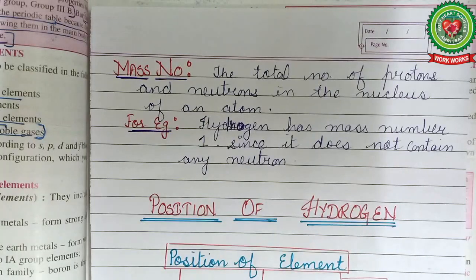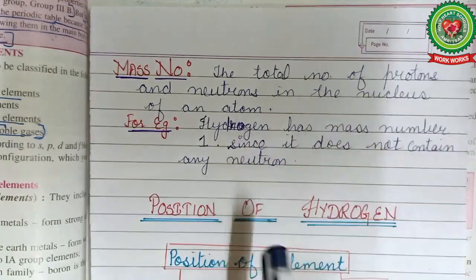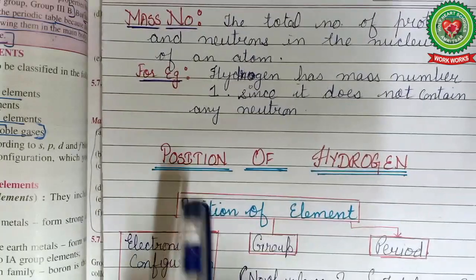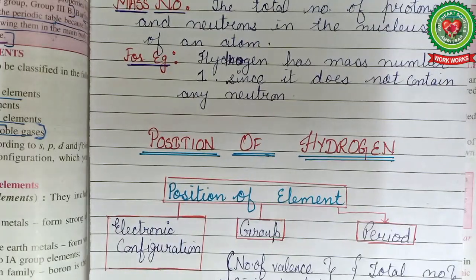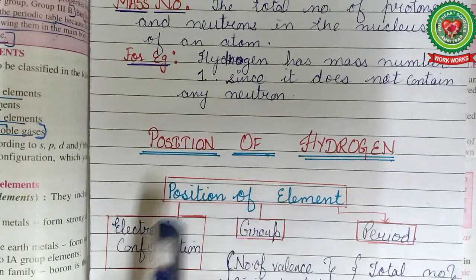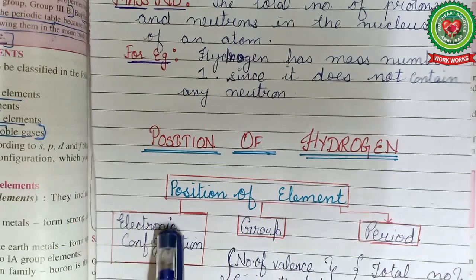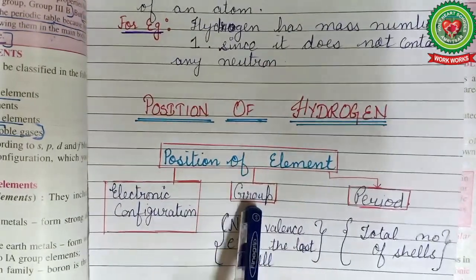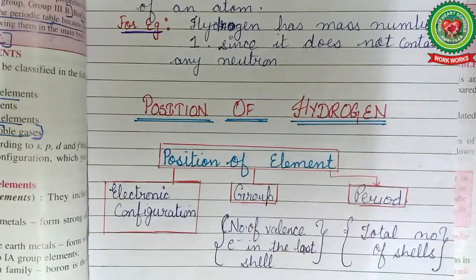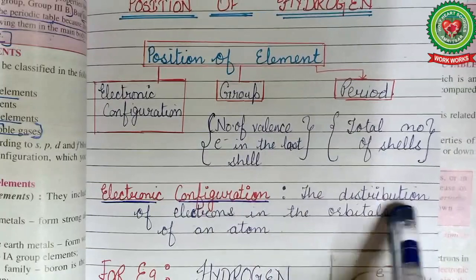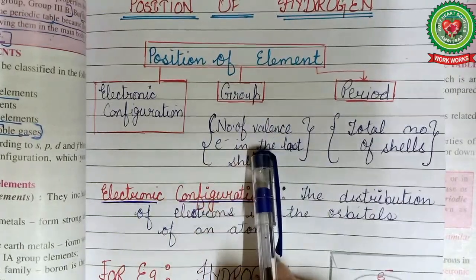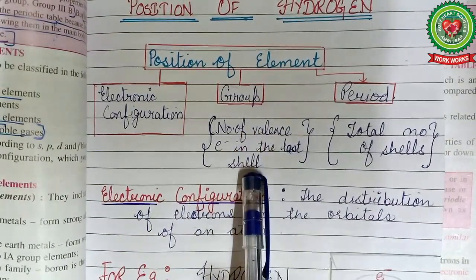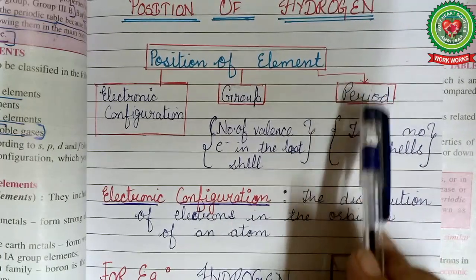Now let's start with the position of hydrogen. To understand the position of an element in the periodic table, we need to know three things: its electronic configuration, its group number, and its period number. Electronic configuration is the distribution of electrons in the orbits of an atom. The group number is determined by the number of valence electrons in the last shell, and the period number is determined by the total number of shells.